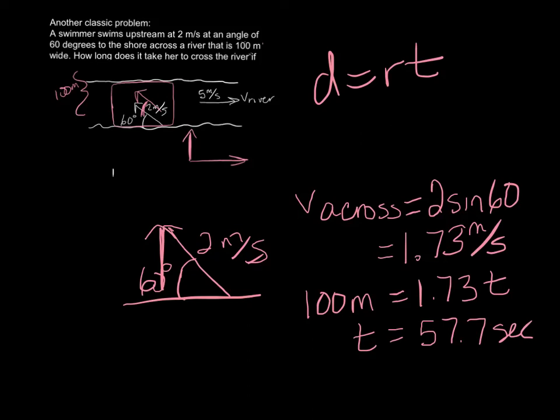And then you could ask yourself, how far downstream does she land? What's her net resultant velocity that would be adding the two vectors? So there's all kinds of problems that you can put on top of these.